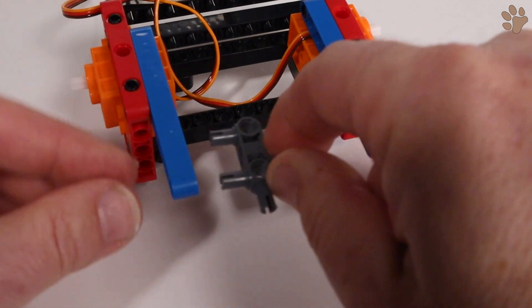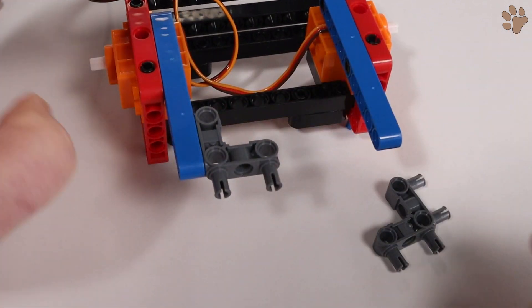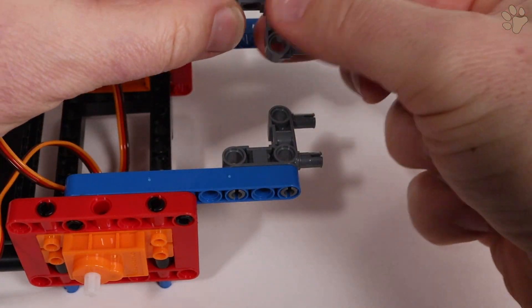Now we'll add a pair of 90 degree connectors. Snap them into the blue frame so that the pins are facing outwards.